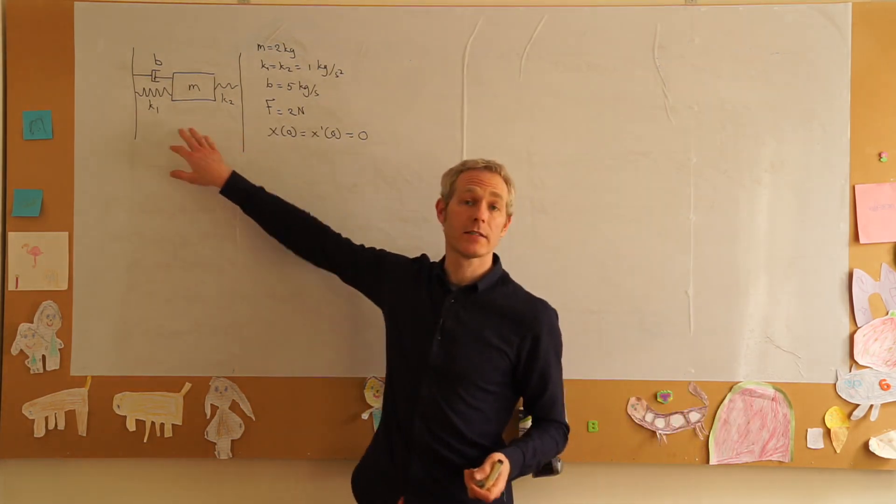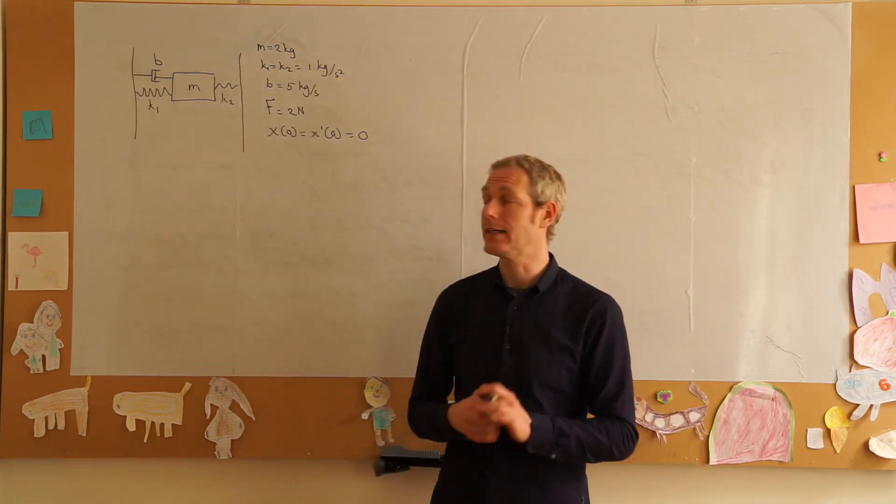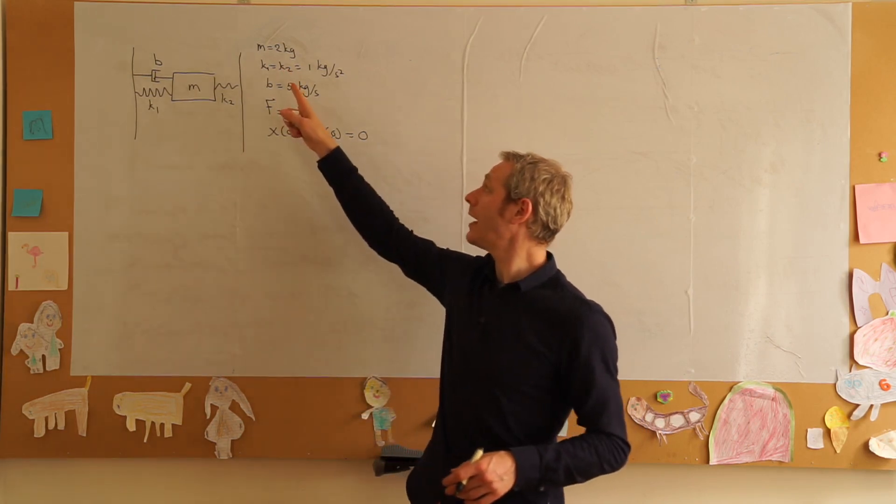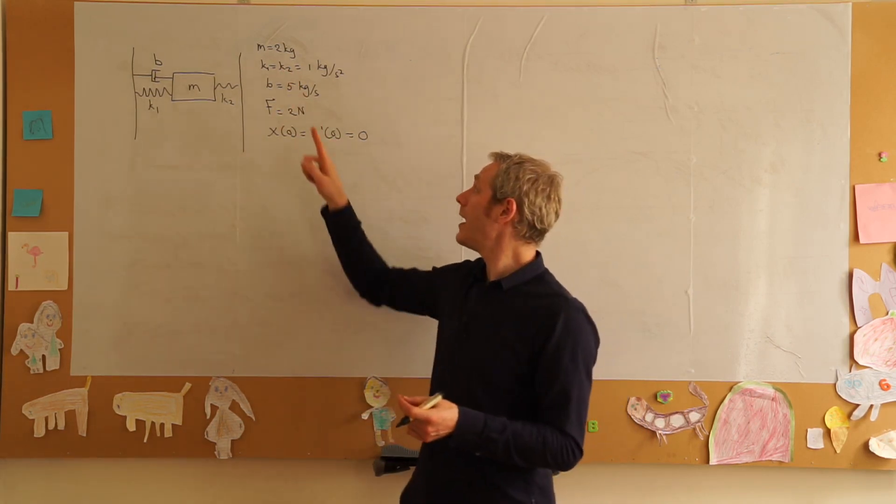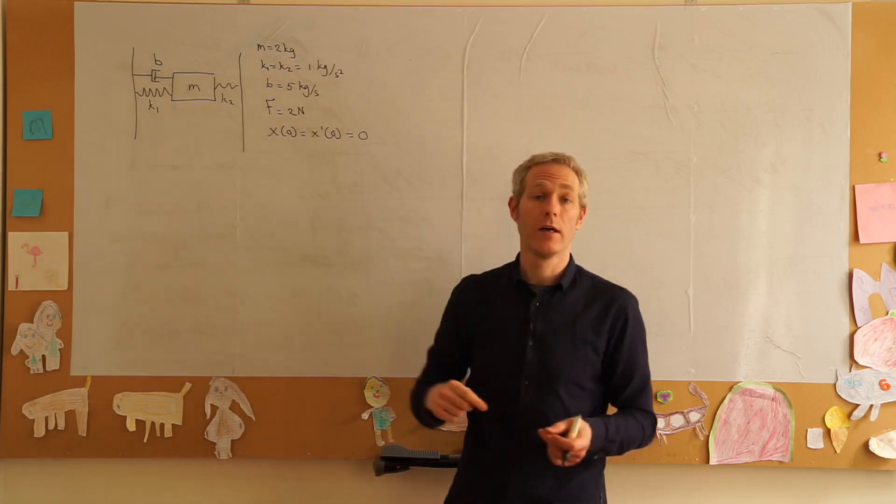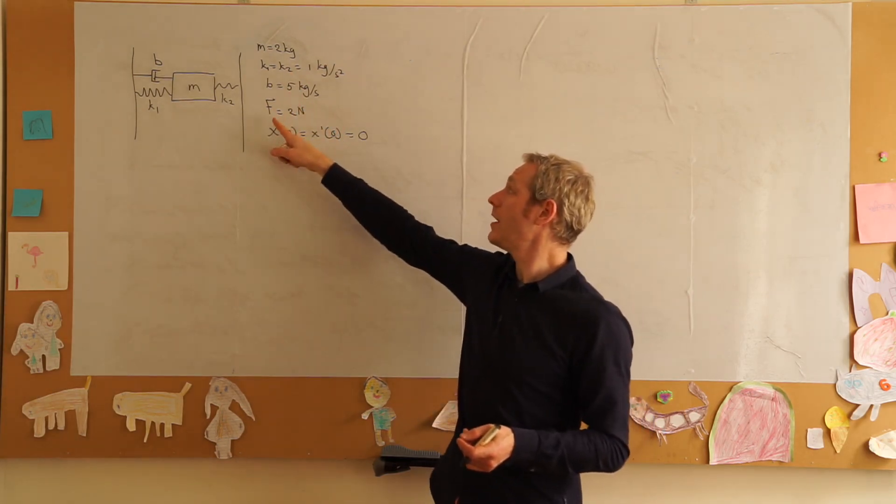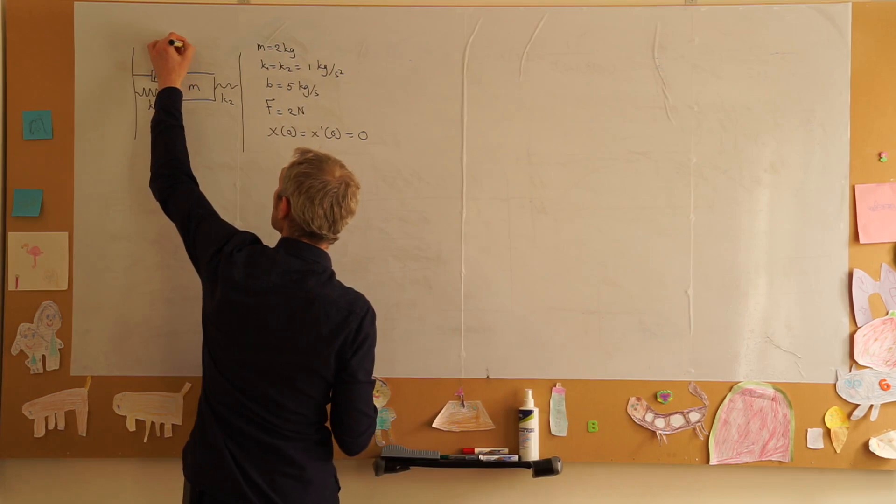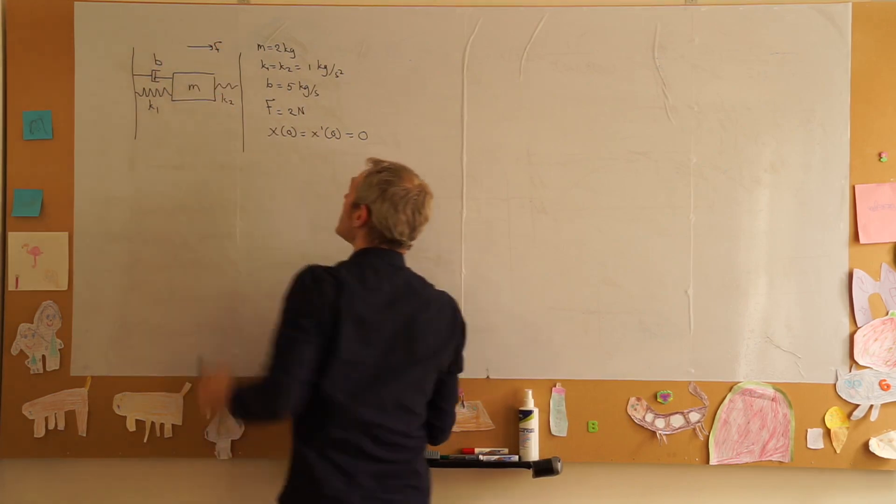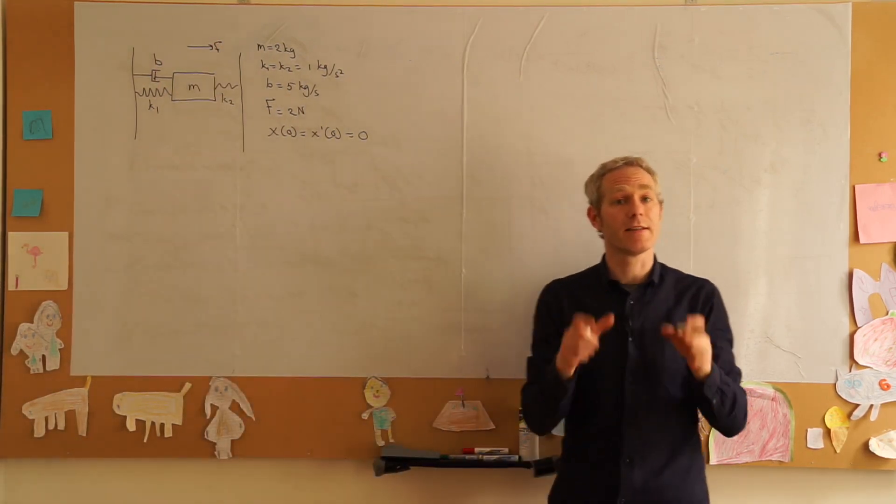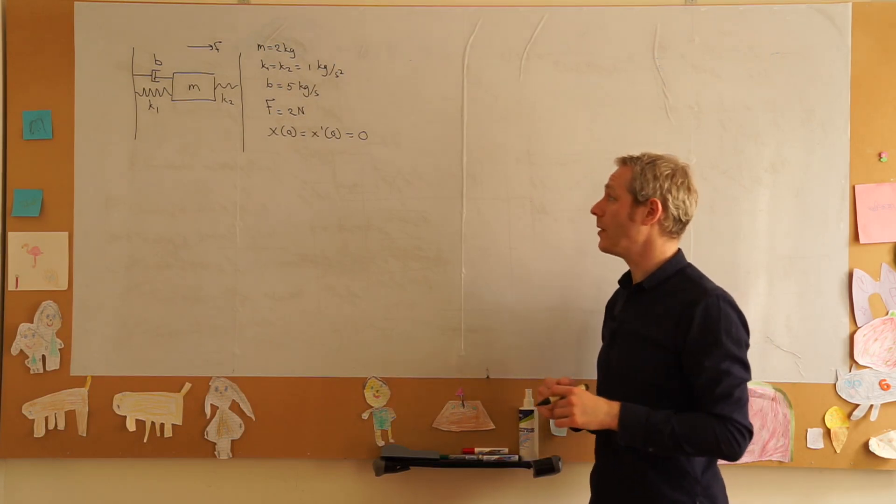We have a mass held in balance by two springs and a damper where the mass is 2 kilos, the spring constants are equal to 1, the damping coefficient is 5. We apply an external force F in this direction of 2 newtons and the system is at rest when we start.